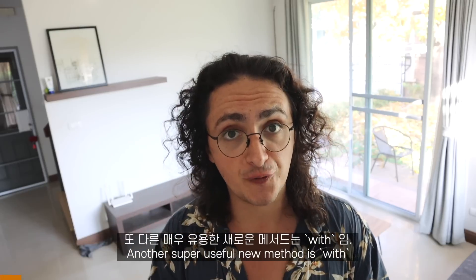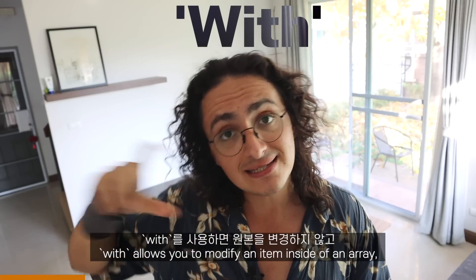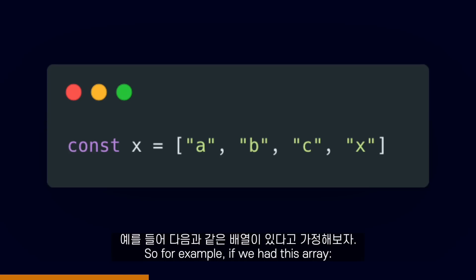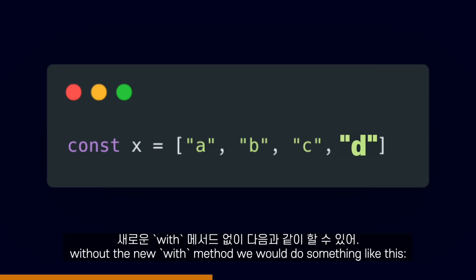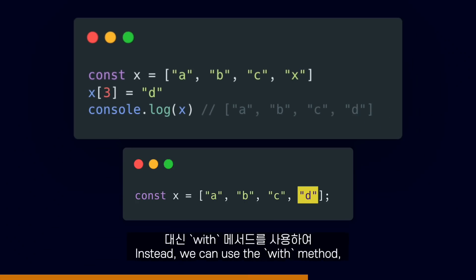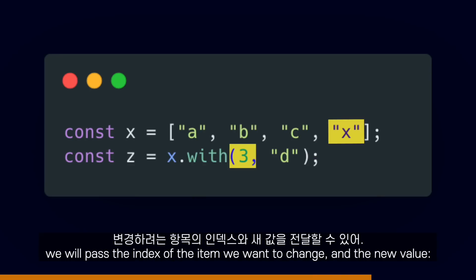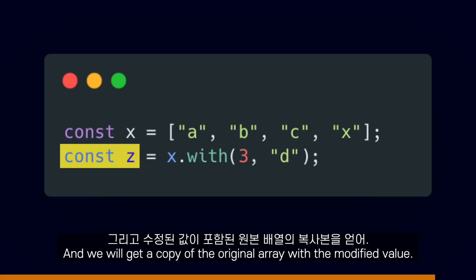Another super useful new method is with. With allows you to modify an item inside of an array without mutating the original. So for example, if we had this array and we wanted to change the X for a D, without the new with method we would do something like this — but that would mutate the original array. Instead, we can use the with method, passing the index of the item we want to change and the new value, and we will get a copy of the original array with the modified value.